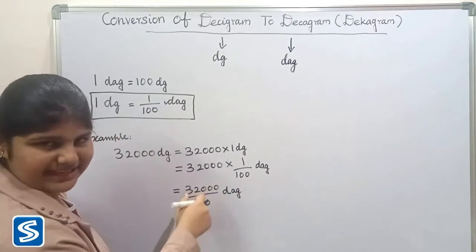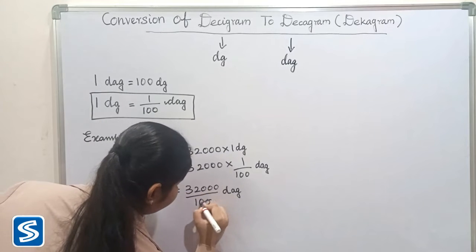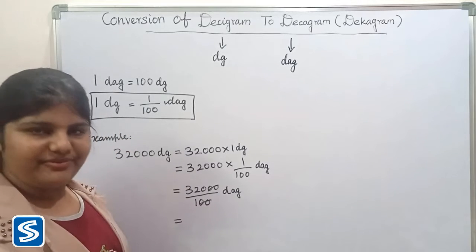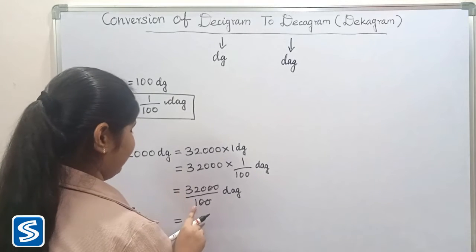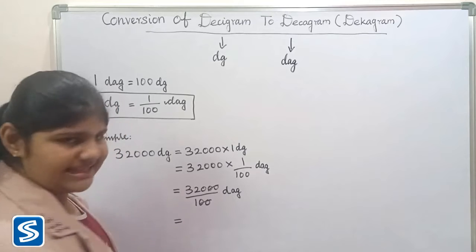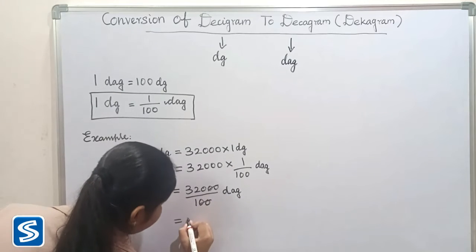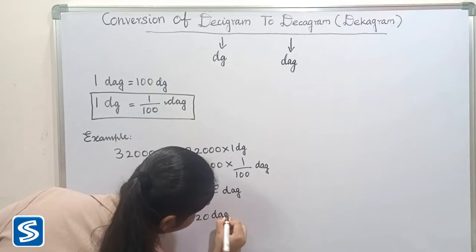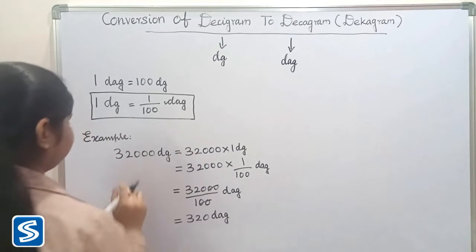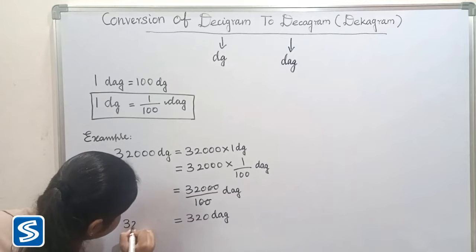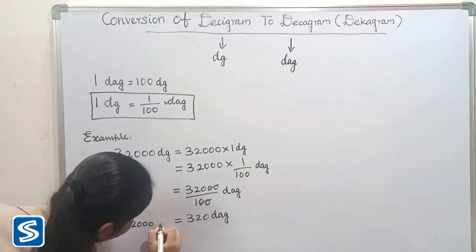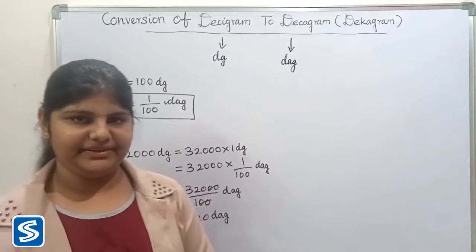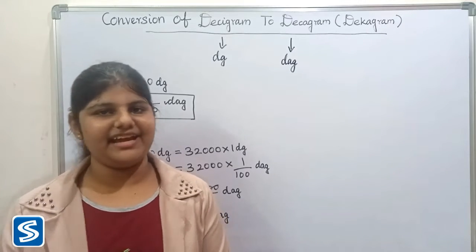Here the two zeros get cancelled. So when we divide 32,000 by 100, our answer will be 320 decagrams. So 32,000 desigrams is equal to 320 decagrams. Next we will take another example.